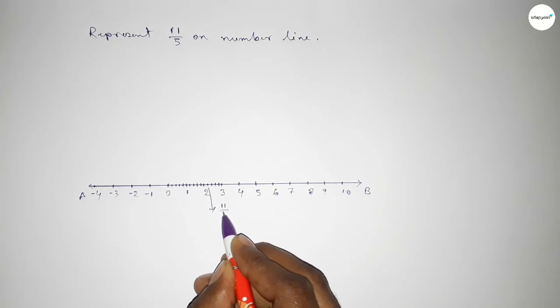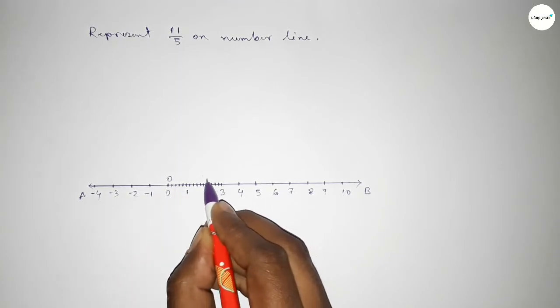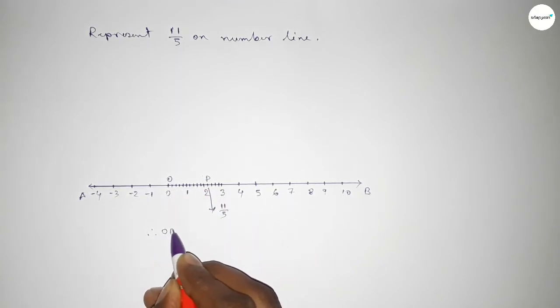So this is 11 over 5 on the number line. Taking O and P, therefore OP equal to 11 over 5 unit. That's all, thanks for watching. If this video is helpful to you, then please share it with your friends. Thanks.